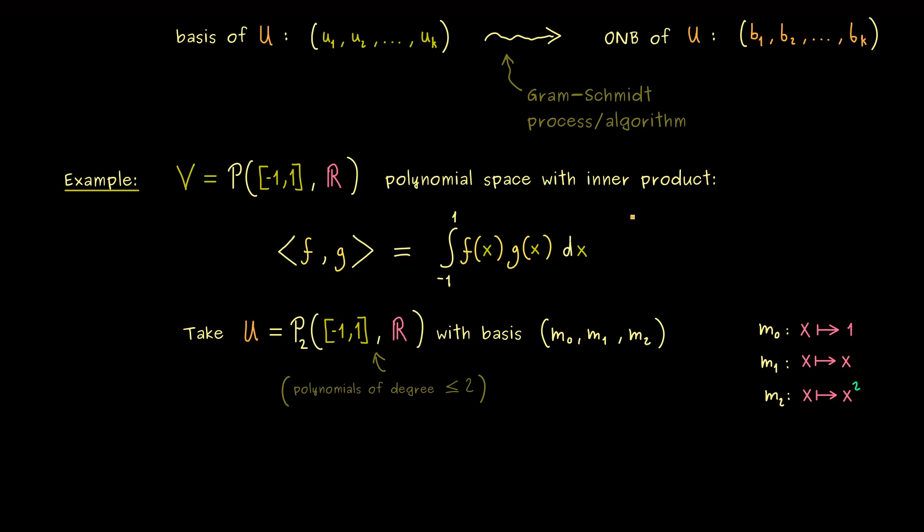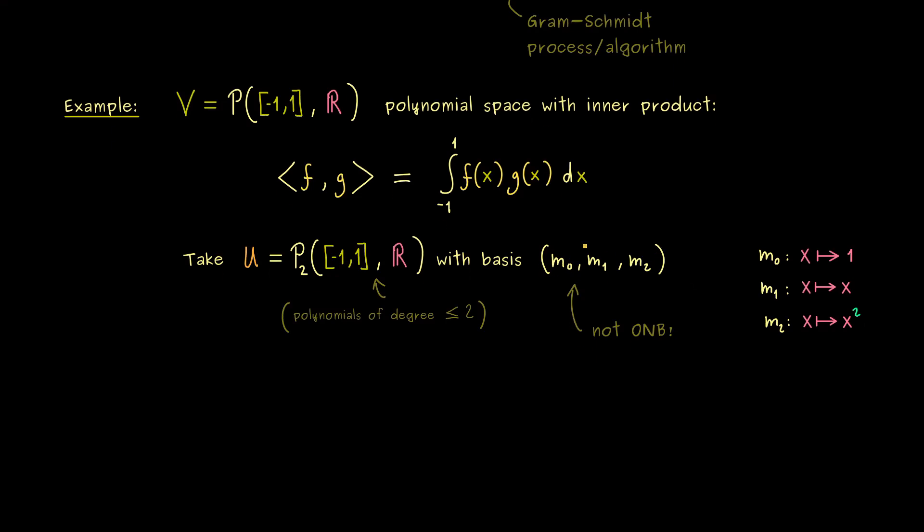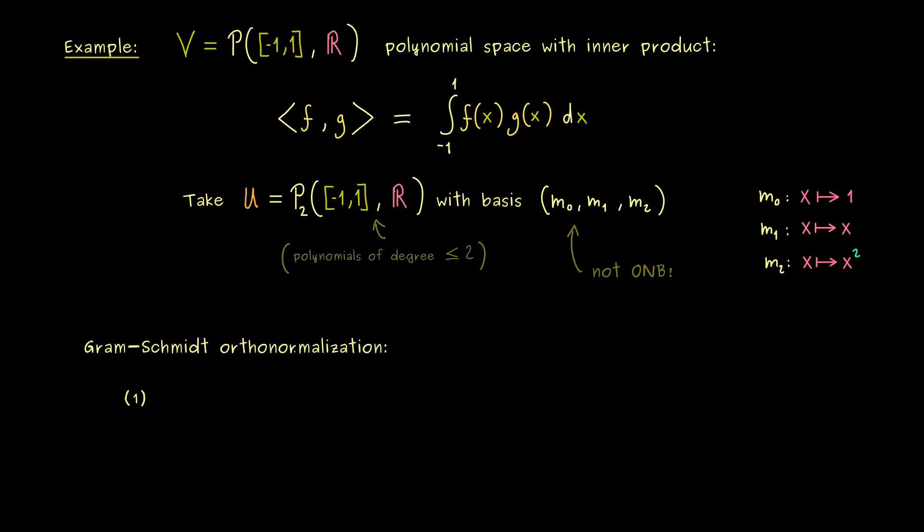For that reason, we start with the index 0 now instead of the index 1. But of course, this does not change anything. The whole algorithm stays exactly the same. In fact, we have to apply the Gram-Schmidt orthonormalization because this basis here is not an ONB. This is already easy to see just by integrating the constant function. Actually, we already know that this is exactly the first step in the Gram-Schmidt process. We have to normalize the first vector.